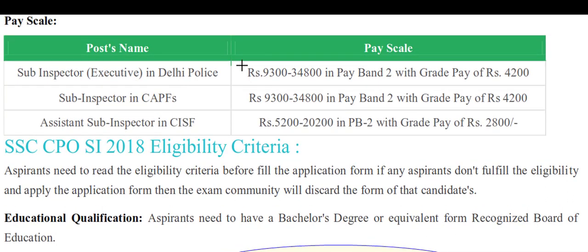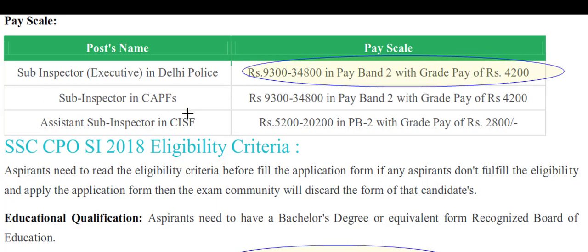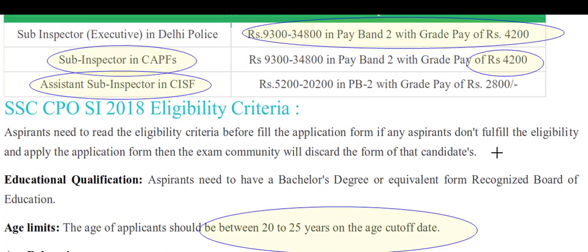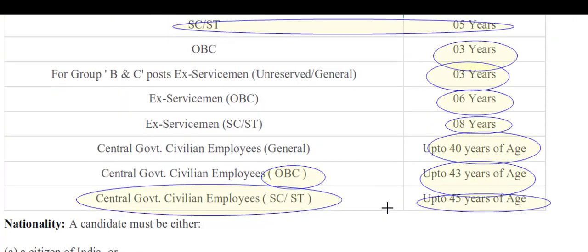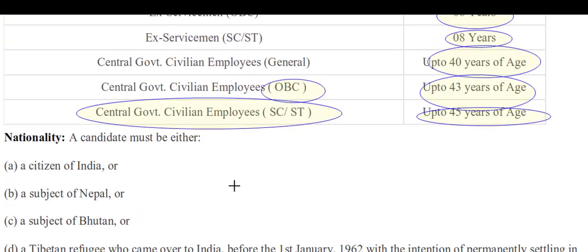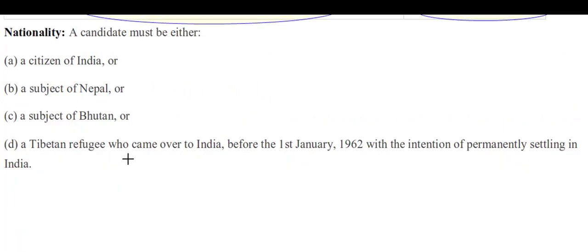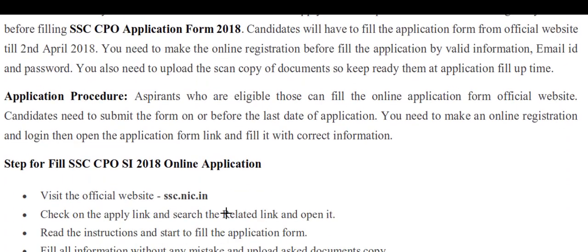The pay scale is 9300 to 34800, Pay Band 2 with Grade Pay 4200 for Sub-Inspector CAPF, and Grade Pay 2800 for Assistant Sub-Inspector CISF. Check the eligibility criteria on the official website.